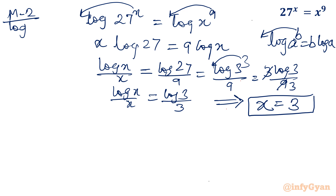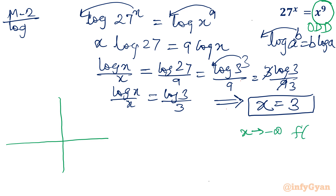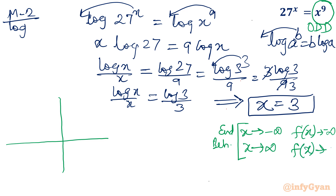Now let us talk about the odd function. You can see x power 9 is an odd function. What does it mean? At x tending to minus infinity, the odd function tends to minus infinity, and at x tending to plus infinity, it tends to plus infinity. This is called end behavior, and it helps us while graphing. The graph of the right hand side function behaves accordingly.